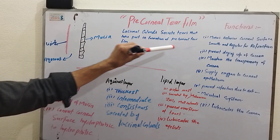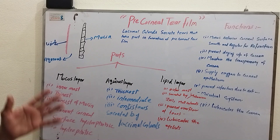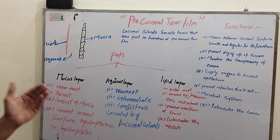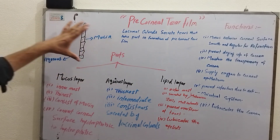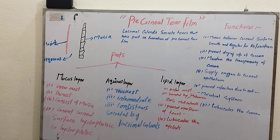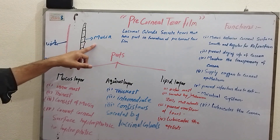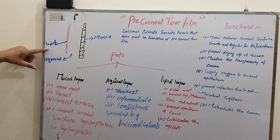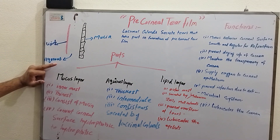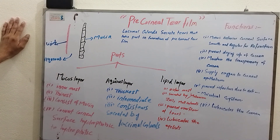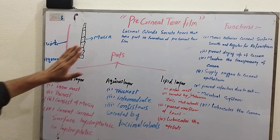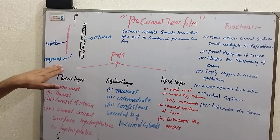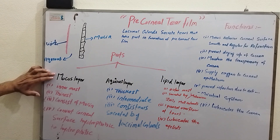Pre-corneal tear film basically has three parts. The outermost layer is the lipid layer, the innermost layer is the mucin layer, and the middle layer is the aqueous layer.